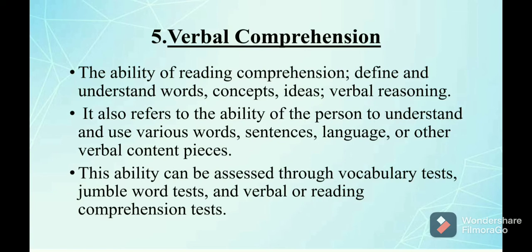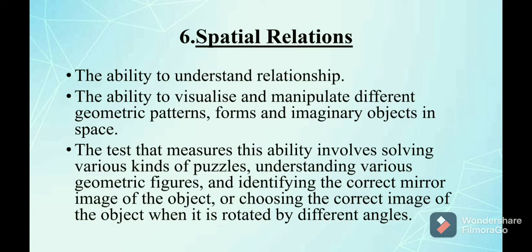The sixth primary mental ability is spatial relations — the ability to visualize and manipulate different geometric patterns, forms, and imaginary objects in space. This ability comes into play when a person tries to understand the manipulation of real or imaginary objects in space. Tests that measure this ability involve solving various kinds of puzzles, understanding geometric figures, and identifying the correct mirror image of an object or choosing the correct image when it is rotated by different angles.